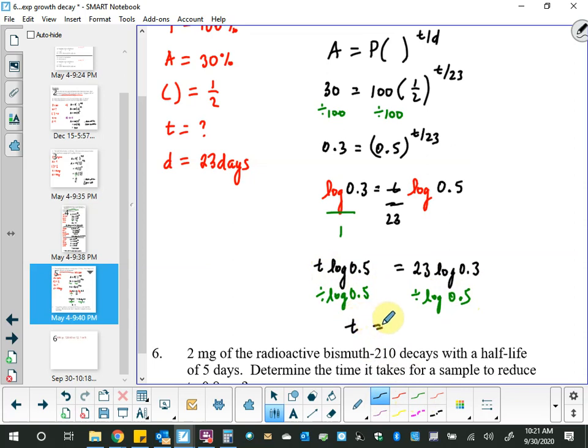And get yourself an answer using your calculator. So, this is not a question that you would see at a school that didn't use a calculator. So, 23 times log 0.3 divided by log 0.5 equals 39.95020867. So, to one decimal place, I have to specify that it's not exactly 40. It's 40.0. Therefore, it will take approximately 40.0 days.